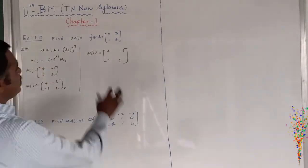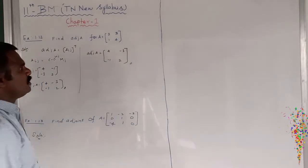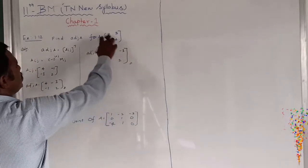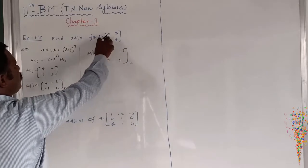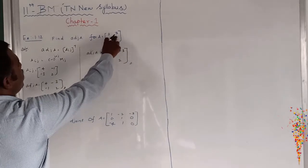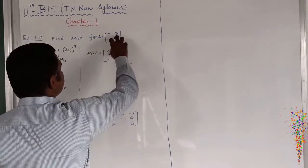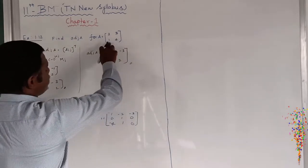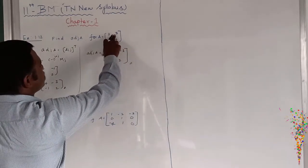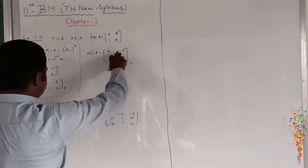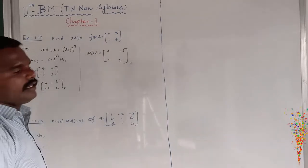It is a simple way. Directly, we interchange the first row first column with the second row second column elements, and change the sign of the off-diagonal elements. If there is already a minus, we just put plus. This is the 2×2 order short method to find the adjoint of A.